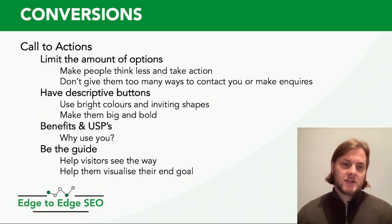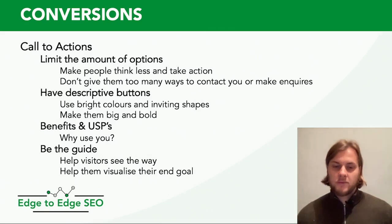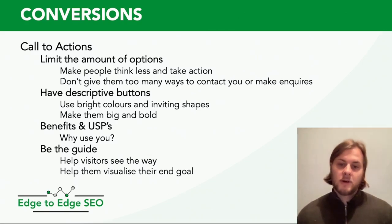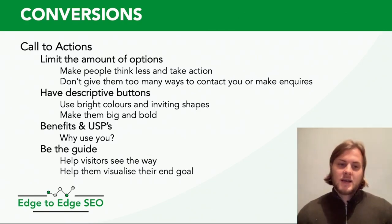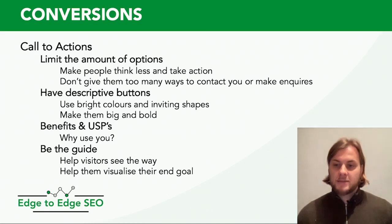The first thing to look at is your call to actions. Limit the amount of options you give people when they land on your site. Sometimes you go on a site and there are three, four, or five different things they want you to do — this confuses people, and eventually they take no action at all because there are too many options. Limit the options, make people think less and take more action. With only one or two call to actions, it's much easier for them to process and more likely they'll actually click.